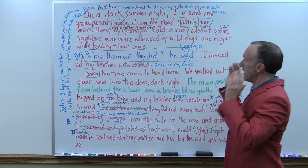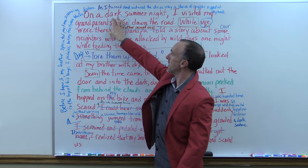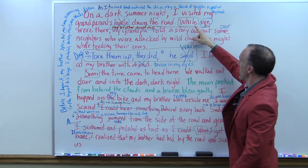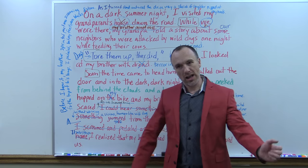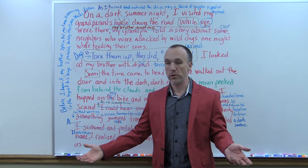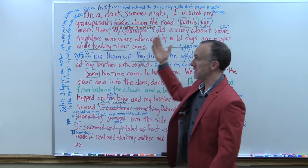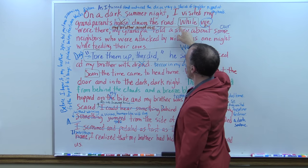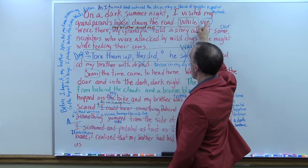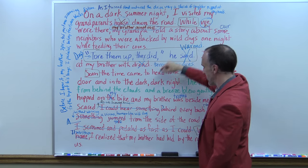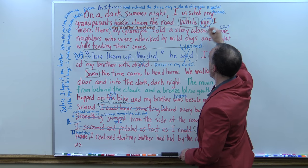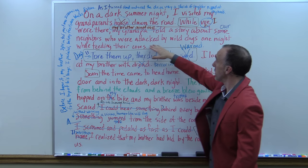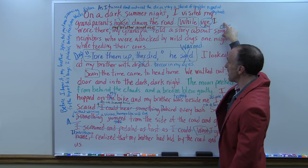On the board you can see: 'On a dark summer night, I visited my grandparents' — take out the apostrophe. I don't need to say I visited their house; I just visited my grandparents down the road. I had not put an antecedent to my pronoun 'we' — who's 'we'? Because I said 'I.' So I changed it to: 'While I was there, my brother joined me and my grandpa told a story about our neighbors who were attacked by wild dogs.' I changed 'some neighbors' to 'our neighbors' and added the word 'dogs.'